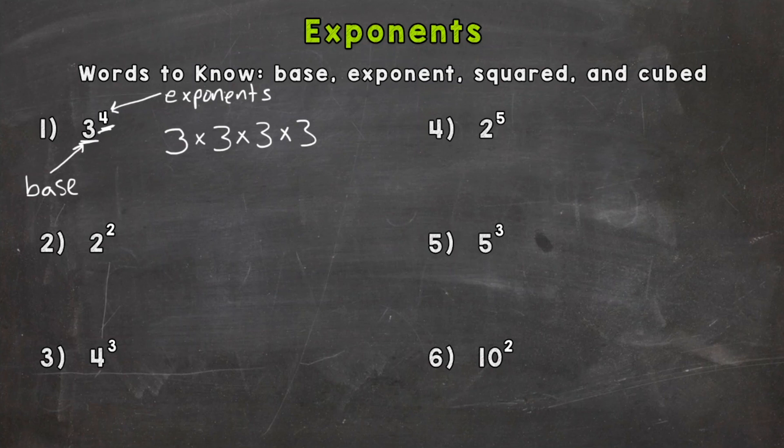So now we solve. So we know three times three is nine, but we still have two more threes we need to include. So now let's do nine times three, which is 27. And then we have one more three to include. And 27 times three is 81. So three to the fourth power equals 81. Again, exponents are used to multiply the same number out a certain number of times. So our base three was expanded out four times. Our exponent tells us how many times to expand it out.